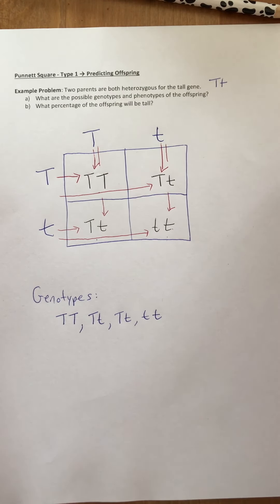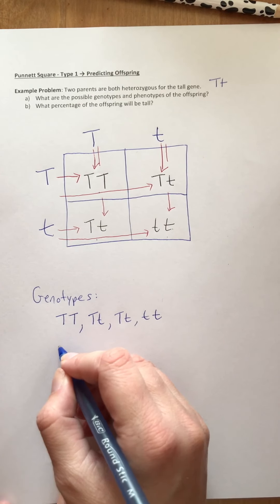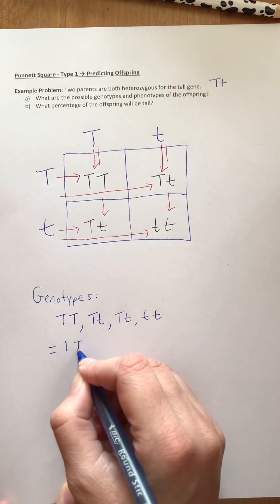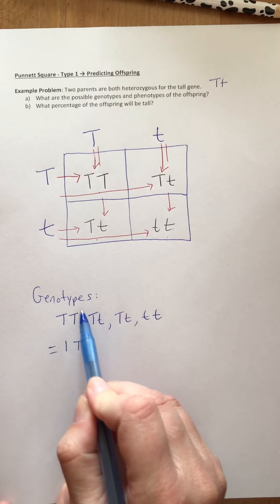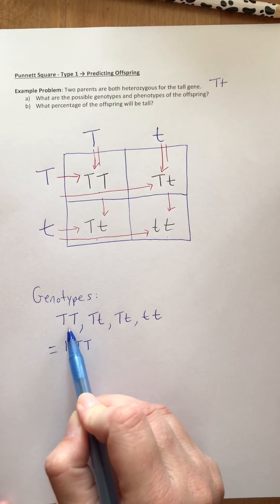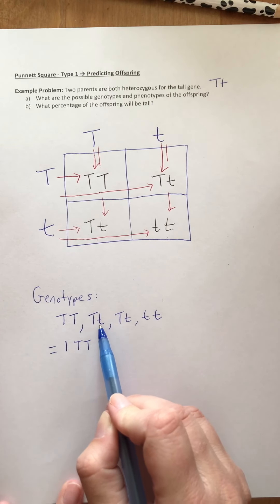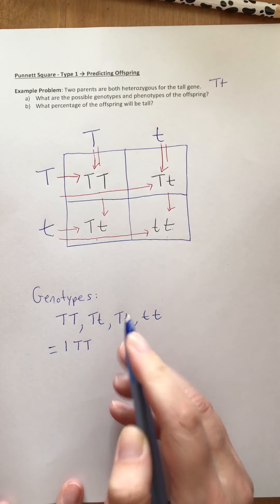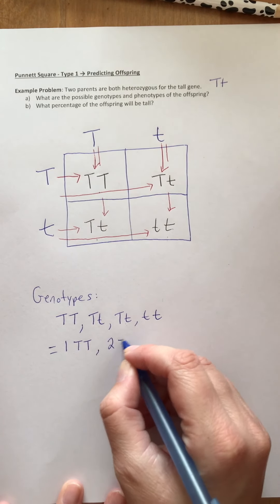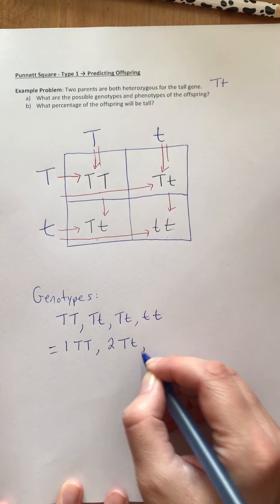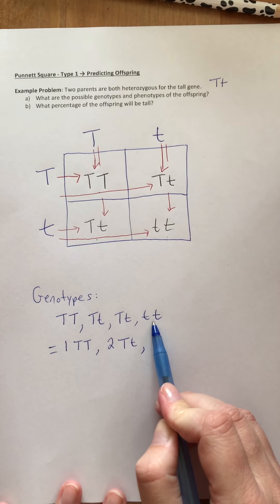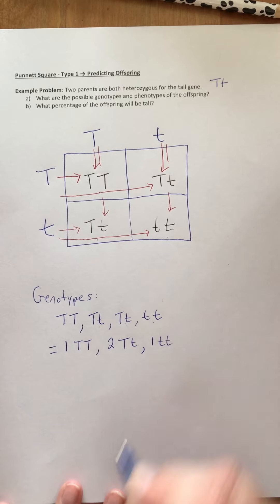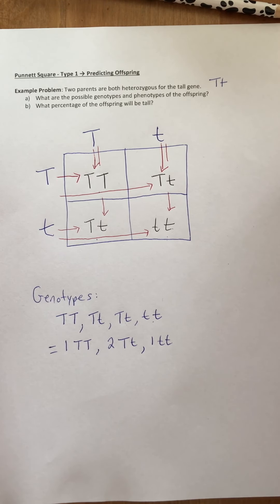We can then combine the ones that are the same. This gives us one capital T capital T, because there's one offspring with both capitals. We have two that are heterozygous — capital T lowercase t — so we write two capital T lowercase t. And the remaining one has both lowercase t's.